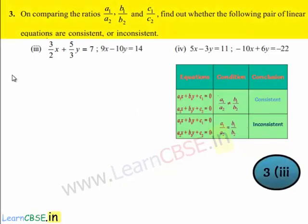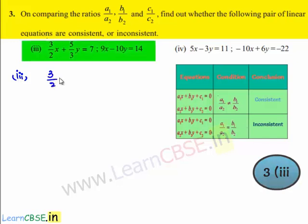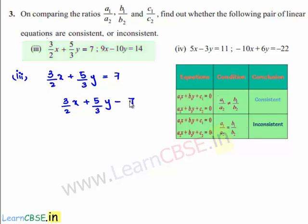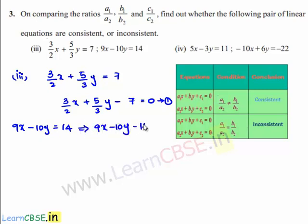Now, coming to the third part, the given set of linear equations are 3 by 2x plus 5 by 3y is equal to 7. This can be written as 3 by 2x plus 5 by 3y minus 7 is equal to 0. This is equation number 1. The second equation is 9x minus 10y is equal to 14, which can be written as 9x minus 10y minus 14 is equal to 0. This is equation number 2.